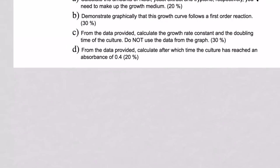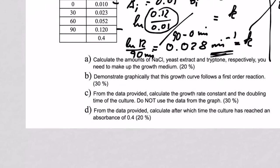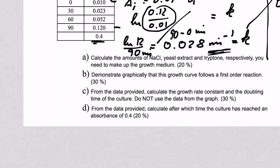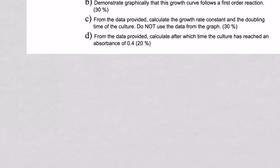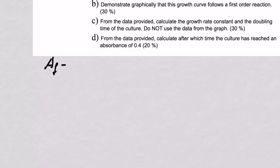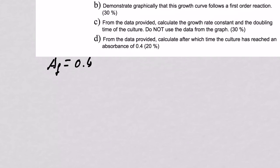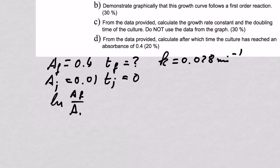And finally, we can address the last question. After what time do we get an absorbance of this one here? So all we need to say is our A final equals 0.4. The t final, that is what we are looking for. Our k equals 0.028 minutes to the minus 1. Our A initial equals 0.01. t initial is 0 minutes. And what we need to do is ln A final over A initial equals k times t final minus t initial, and that is 0.